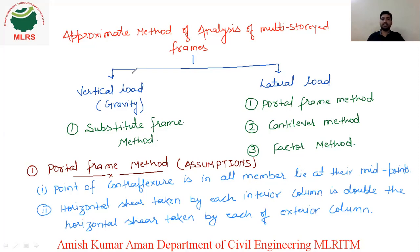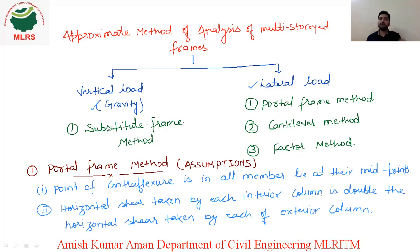This analysis is subdivided into two parts. For gravity loads, or vertical loads, there is a method called the substitute frame method. These are all approximate methods of analysis. For lateral loads, there are three different methods: the portal frame method, the cantilever method, and the factor method.